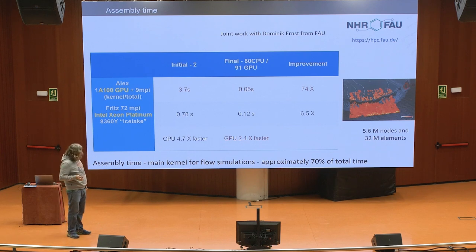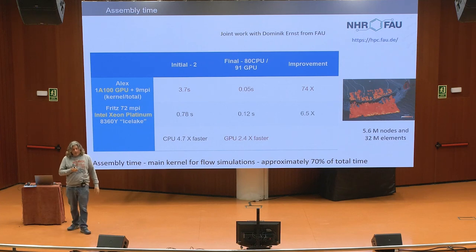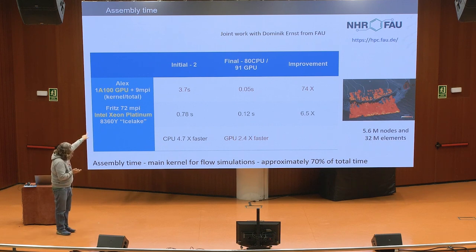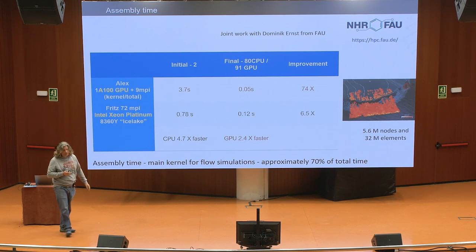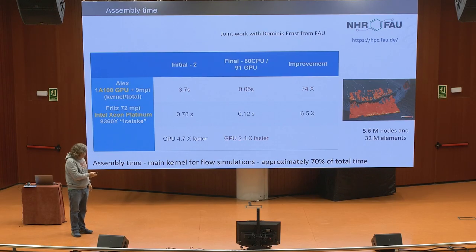Perhaps what is more important is that if we compare our initial implementation, it was running 4.7 times faster on the CPU — faster on the CPU — using 1 A100 GPU against 72 cores from an Intel Xeon Platinum, a very new one. And now we have managed to be 2.4 times faster on the GPU. This is perhaps the most important number.